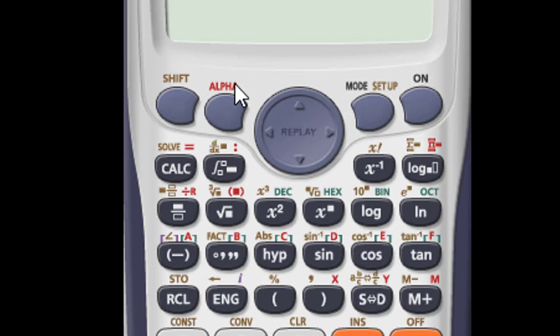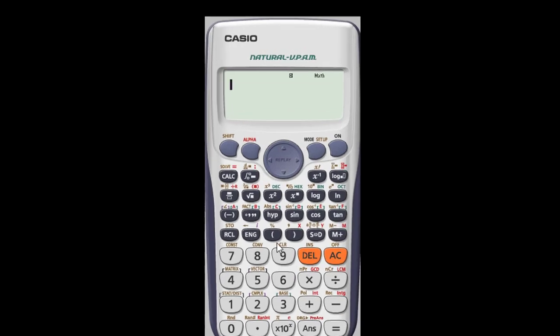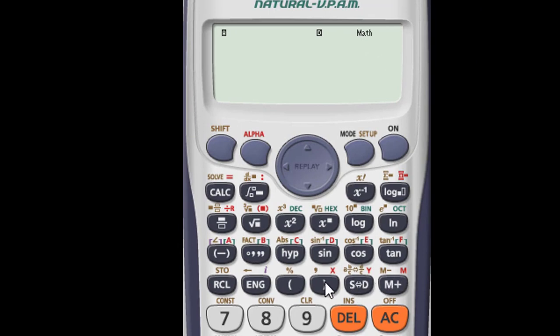Now let's do some practice. When we want to press the alpha keys, if I want the letter X, I have to press the alpha key and I press the close bracket key. When I press it, it appears.